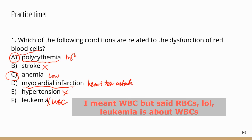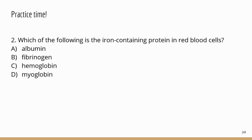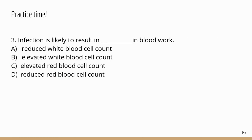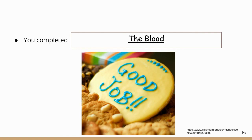Number two: the iron-containing protein in red blood cells is hemoglobin — the protein that transports oxygen and carbon dioxide. Number three: infection is likely to result in an elevated white blood cell count, because the body makes more white blood cells to fight the infection. Good job — you've completed the blood lesson! If you found the video helpful, please subscribe, leave a comment, and give the video a thumbs up.